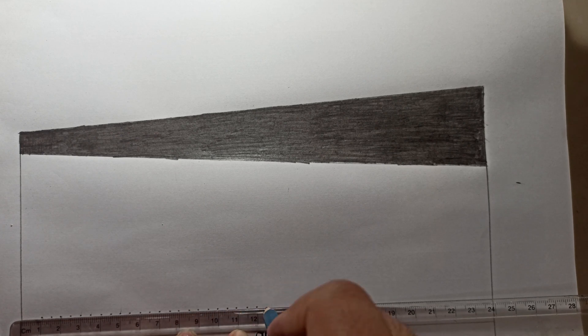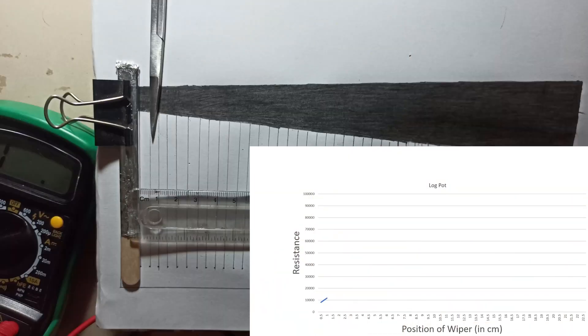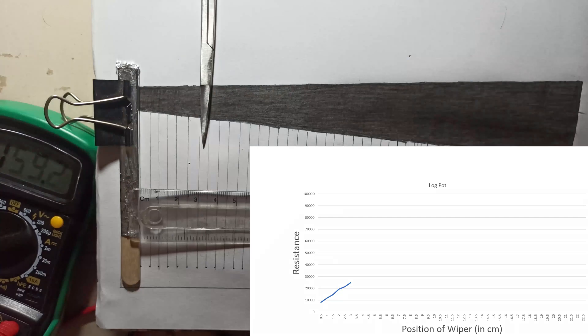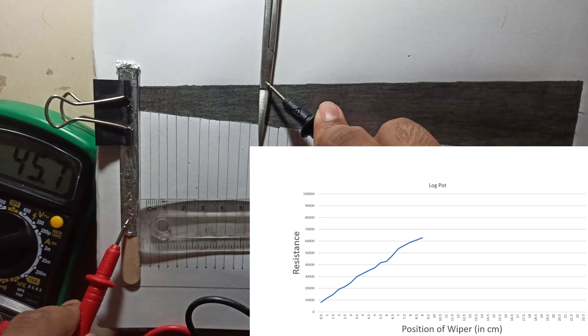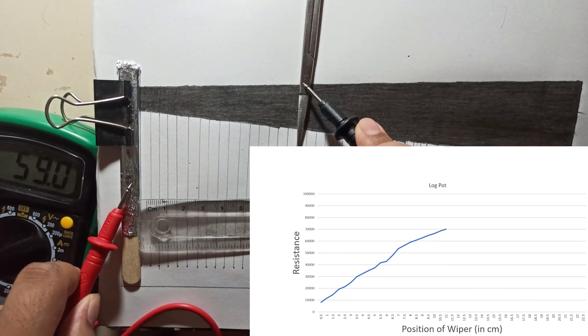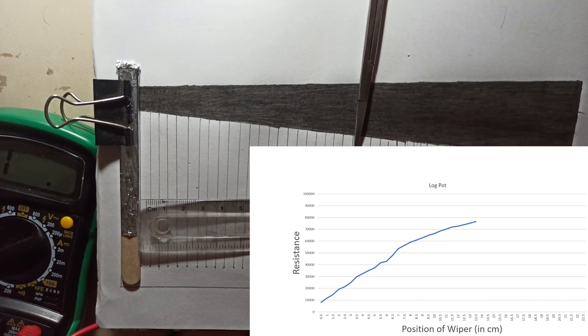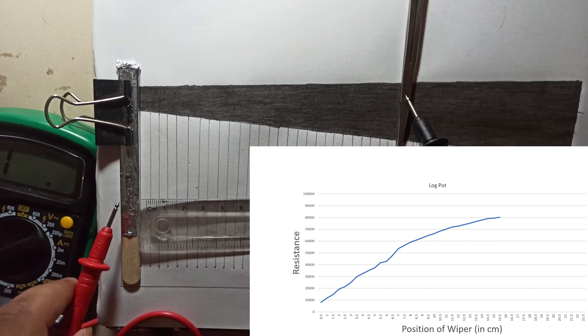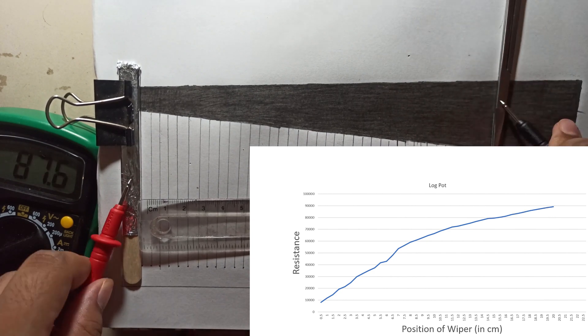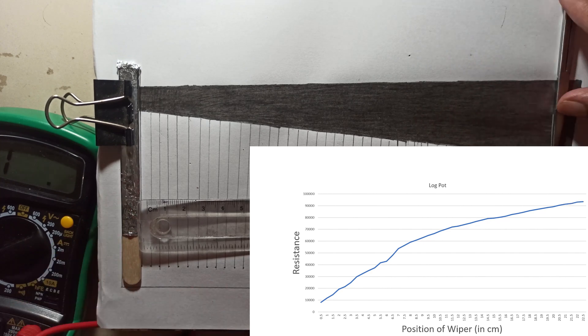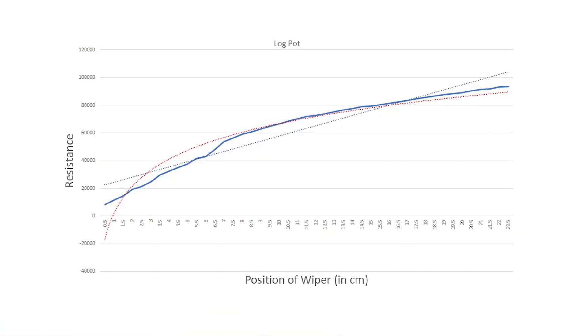Now taking the reading of resistance across the length. The graph definitely doesn't seem to be linear.